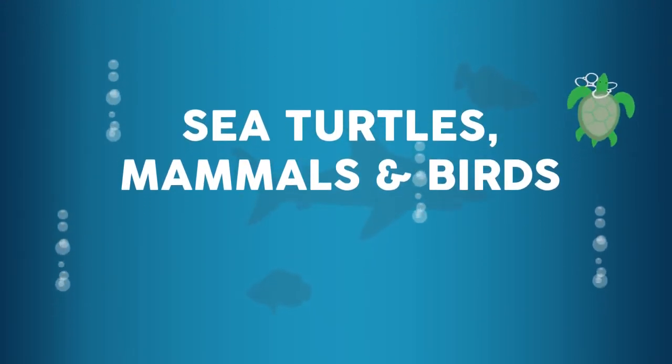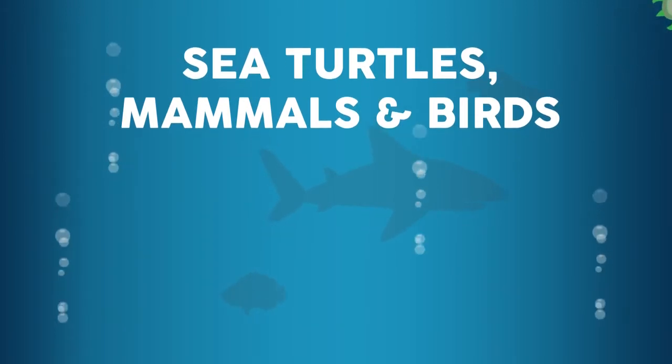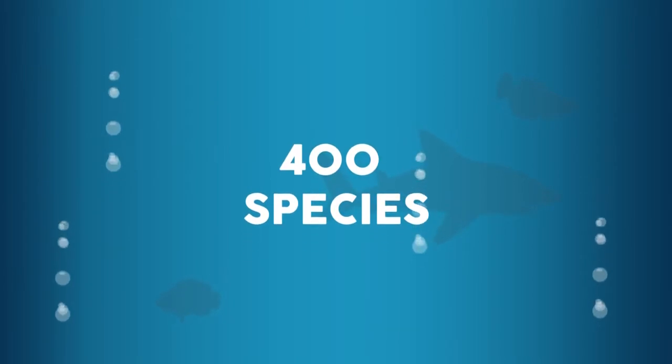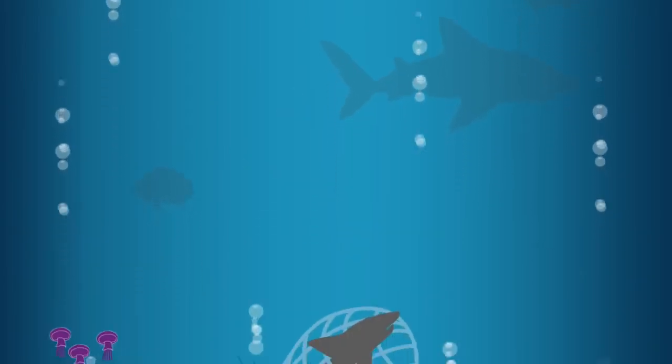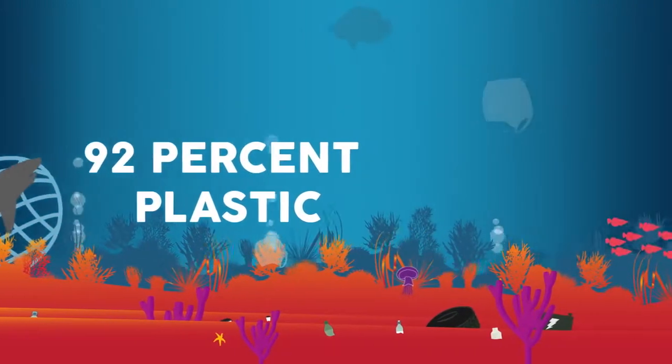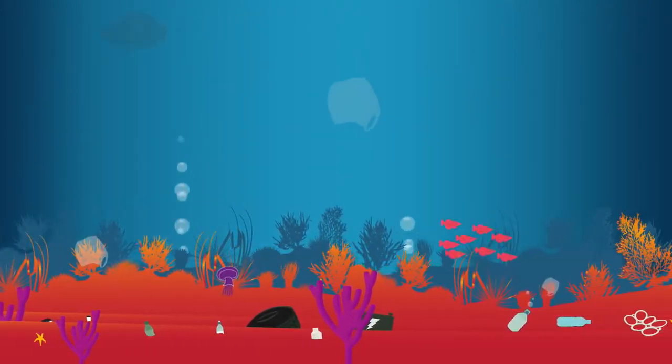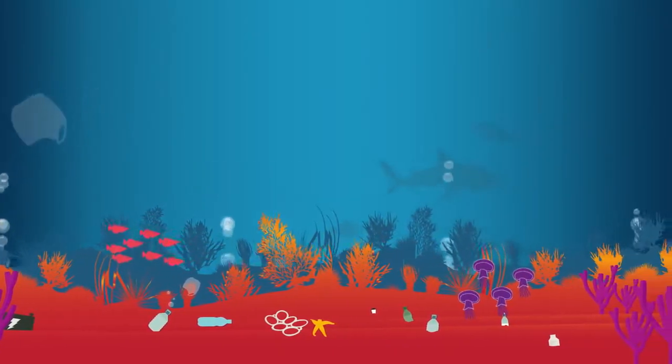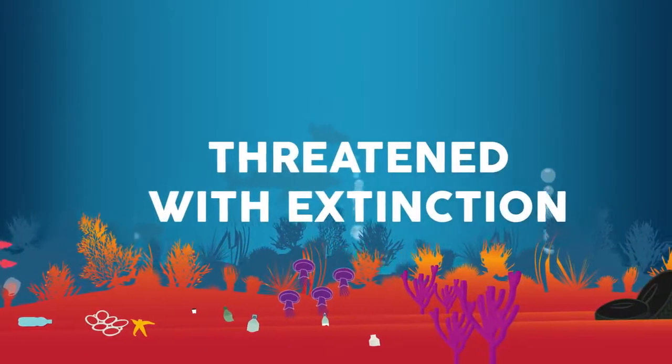That's almost 400 different species that have ingested or become entangled in marine debris. In 92 percent of cases, plastics are the culprit. Our trash hurts the most vulnerable, too. More than one in ten species that have fallen victim to marine debris are threatened with extinction.